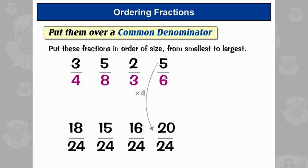Five times four is twenty. So we've got a list of fractions now all with the same number on the bottom. We can compare their sizes just by comparing the numbers on the top. Fifteen twenty-fourths is the smallest, so five-eighths is our smallest fraction.